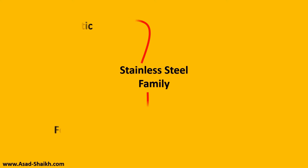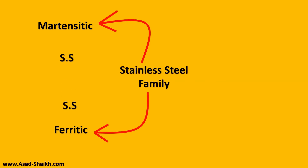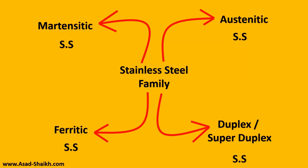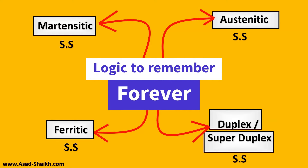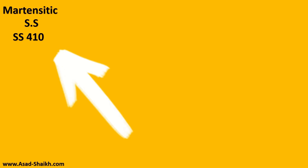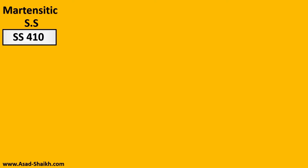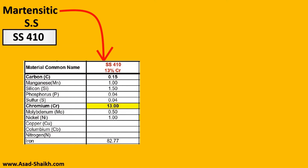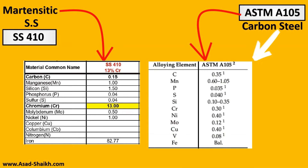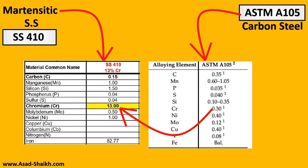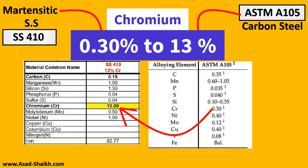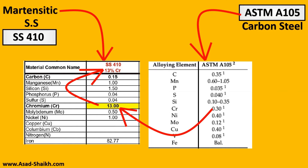The stainless steel family can be divided by structure into martensitic stainless steel, ferritic stainless steel, austenitic stainless steel, and duplex stainless steel. Let us look at martensitic stainless steel with a real-life example — SS410, which is extensively used in valves. Comparing its composition to ASTM A105, the carbon percentage is reduced to just 0.15%, while chromium has jumped from about 0.30% to 13%. That is why the common name for this material is also '13% chromium' — because chromium defines its major characteristics.